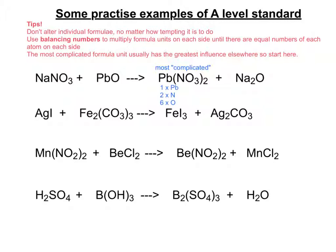So now what we can do is start to assign balancing numbers elsewhere. We only have one lead, so we don't have to assign another balancing number to the lead oxide, because to do so would be to multiply up the lead oxide too many times. What's interesting though is there are two nitrates and there's only one nitrate over on sodium nitrate on the far left. So we can safely say that we can double up the sodium nitrate on the left, and by doing that we've not only balanced the nitrates, we've also balanced the sodium.